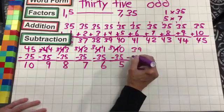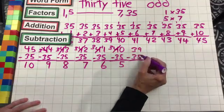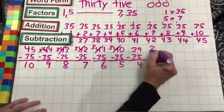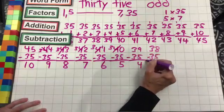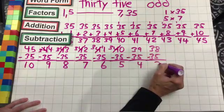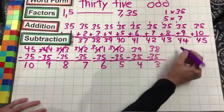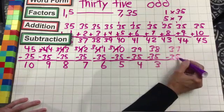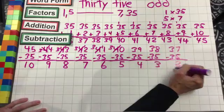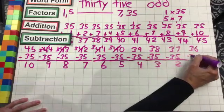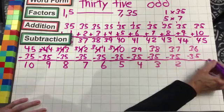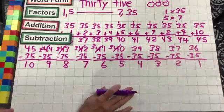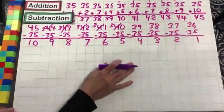39 minus 35: nine minus five is four, three minus three is nothing. 38 minus 35: eight minus five is three, three minus three is nothing. 37 minus 35: seven minus five is two, three minus three is nothing. 36 minus 35: six minus five is one, three minus three is nothing. There we have it — our addition and our subtraction.